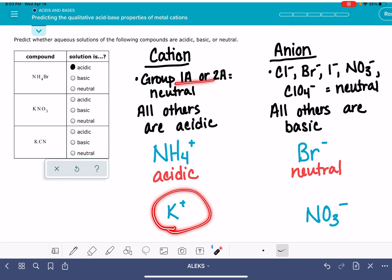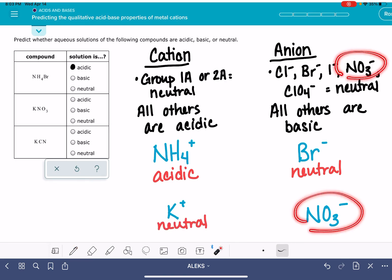Our cation is in, this one is in group 1A on the periodic table. So that means that this is a neutral cation. Our anion is the NO3-, which is also neutral. So here we have a neutral cation with a neutral anion. That's just going to be a neutral solution.